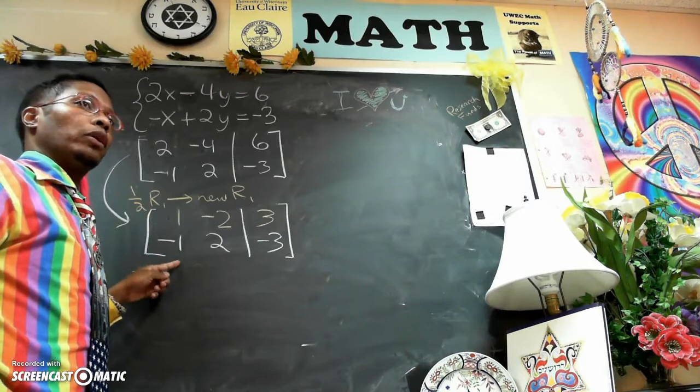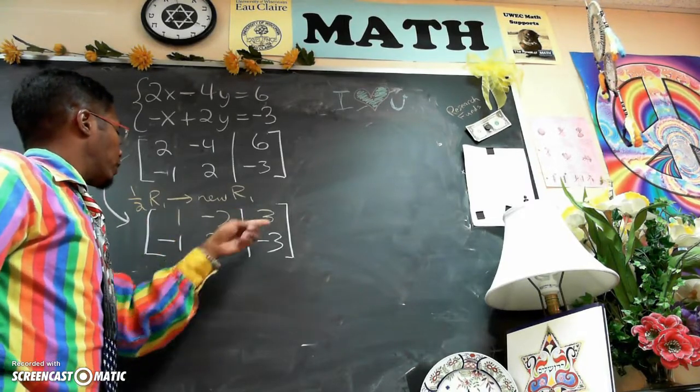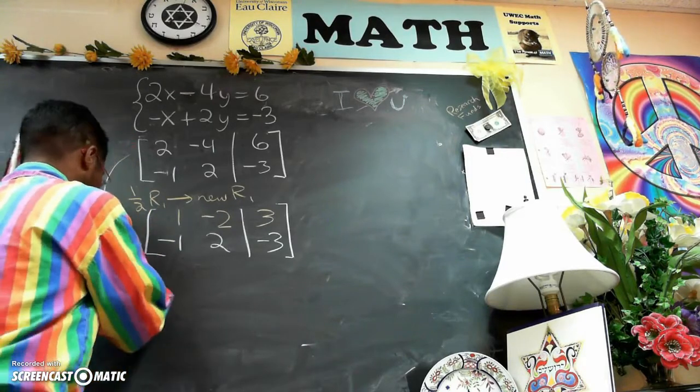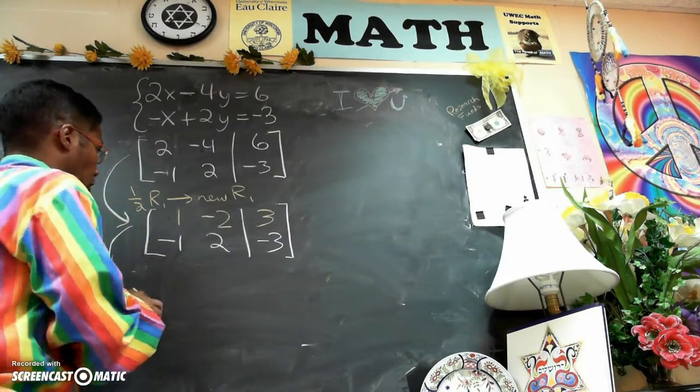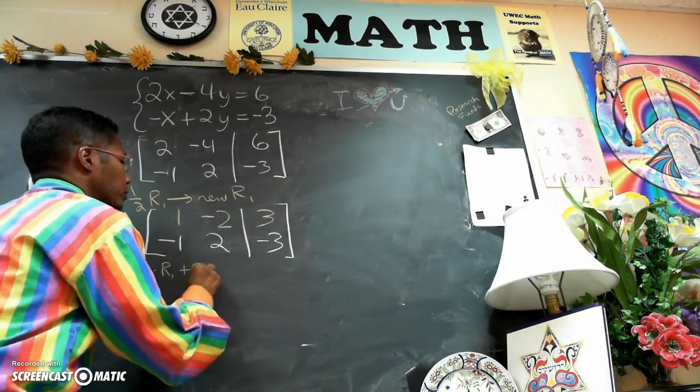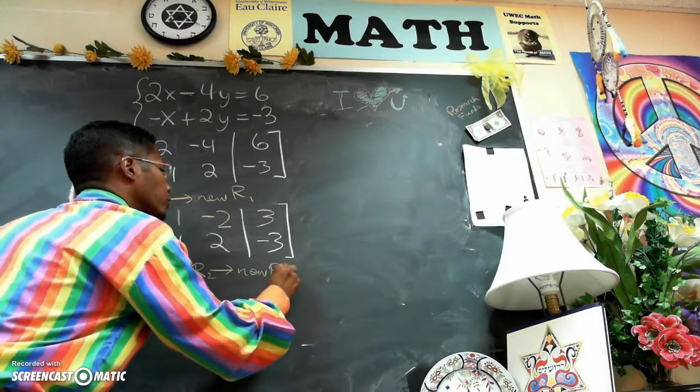So now I have a 1 in the top left. The goal is to get a 0 below it. So I multiply the first row by 1, add it to row 2, and now I get a 0 here. So we're talking about 1 times row 1, added to row 2 to get a new row 2.